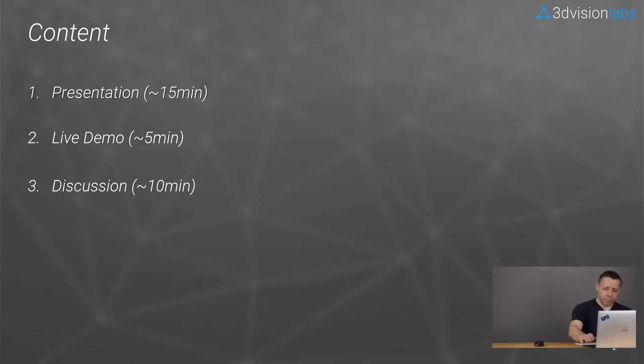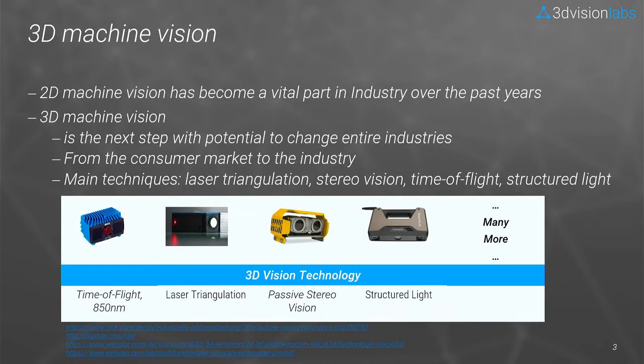Over the past few years, 2D machine vision has become a vital part in industry. It is widely used in classical applications such as pattern recognition or optical inspection. Now 3D machine vision technology is increasingly coming to the fore, and this new technology can change entire industries. Originally, 3D machine vision comes from the consumer market and now heads more and more into industry. I think that seeing intelligent devices are the future, especially in industry.